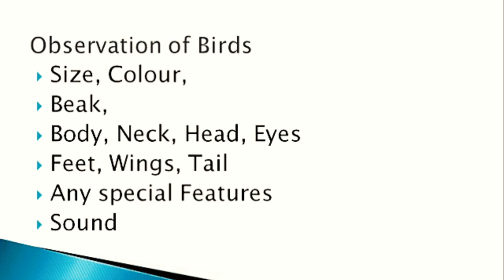In another example of bird observation, the teacher asks children to observe different birds — their size, color, shape of beak, body, neck, head, eyes, feet, wings, tail, and any special feature or sound. If a worksheet is given in advance with all these parameters listed, it gives direction to learners and helps them make progress in their observation. They can see what they are expected to observe and not miss any point. During initial exercises of observation, it is always a good idea to give learners some pointers.